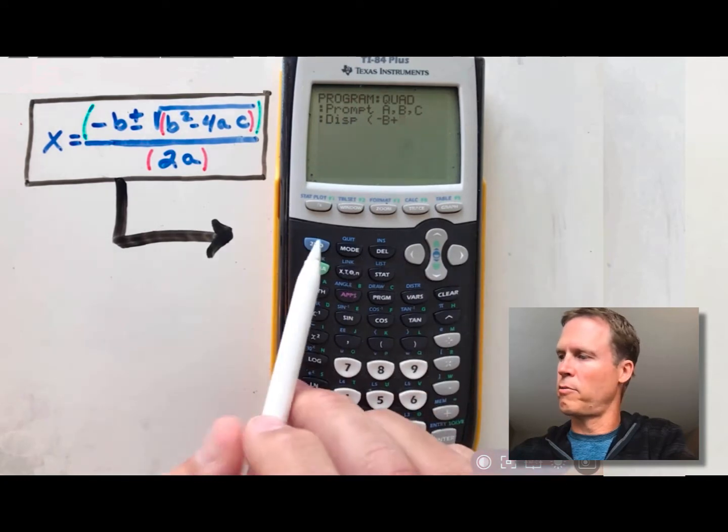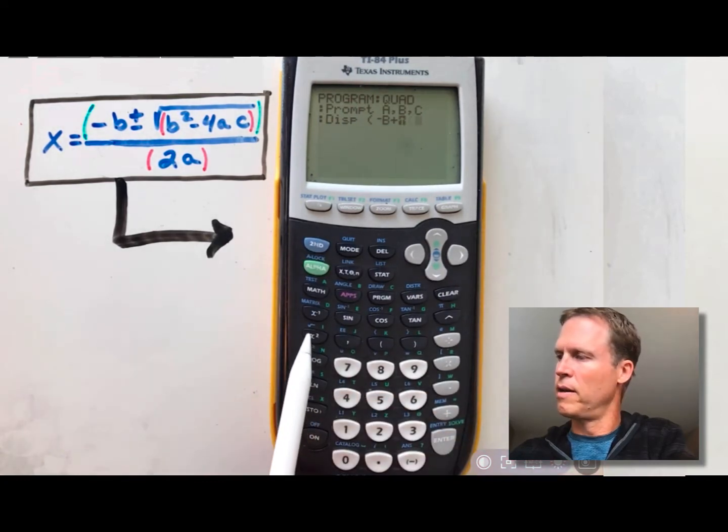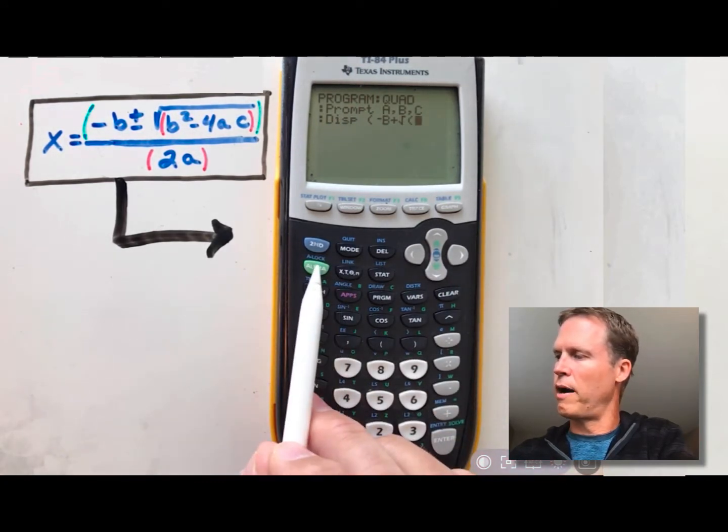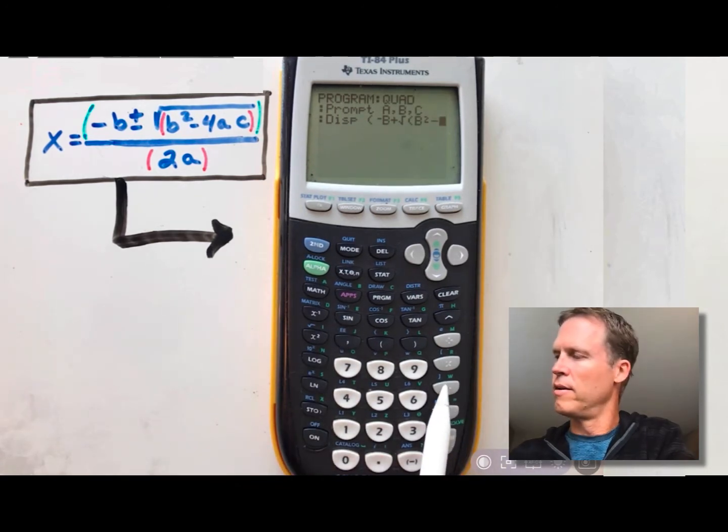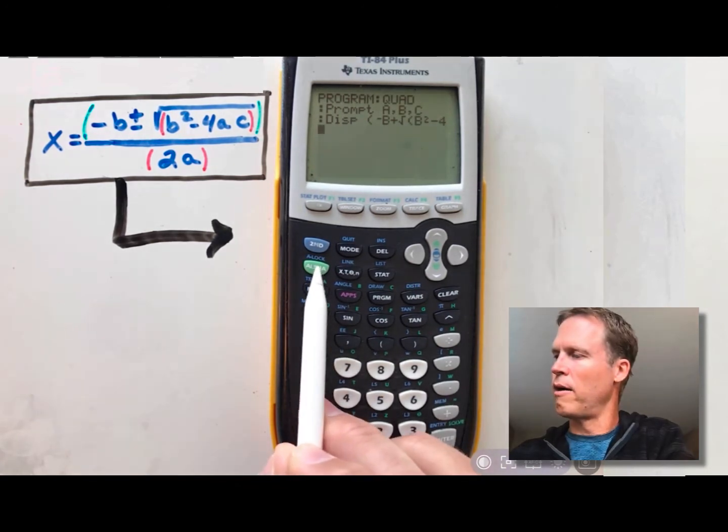So then plus, and then we're going to do the square root, so go second square root, and then you're going to go B squared, so you're going to go alpha B, and then squared, minus 4 times alpha A, and then alpha C.